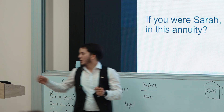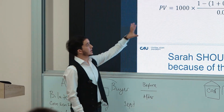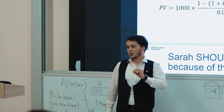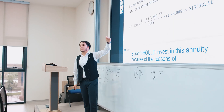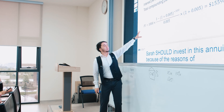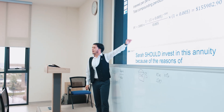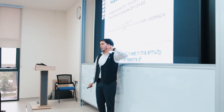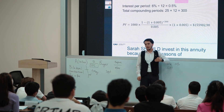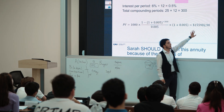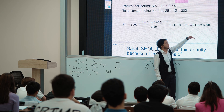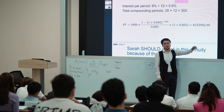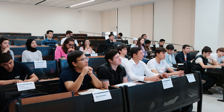That's absolutely correct. The interest rate per period is 0.5% and we're using the present value formula for annuity due — 300 periods, which is 25 years multiplied by 12. Once you calculate, you get $155,982.90 US dollars.